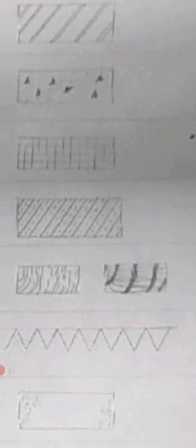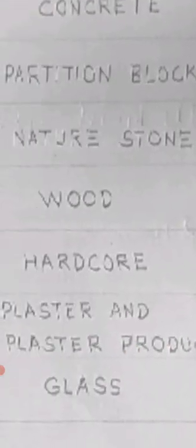Then partition block or wooden block, we show small squares. For plywood we show lines in section. Then natural stone like stone masonry. For wood, we show the grain pattern. For hardcore foundation, there is no specific pattern.